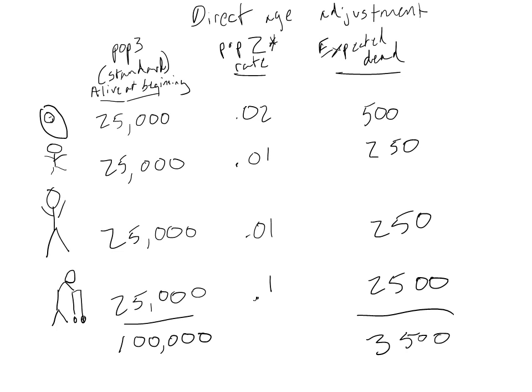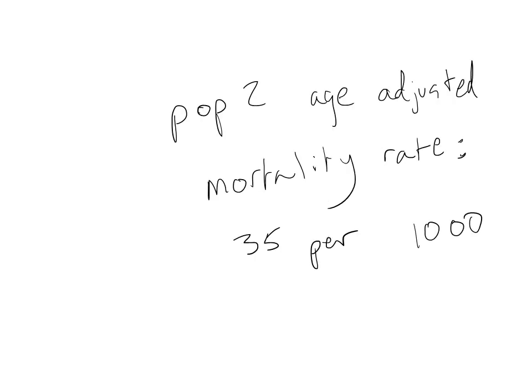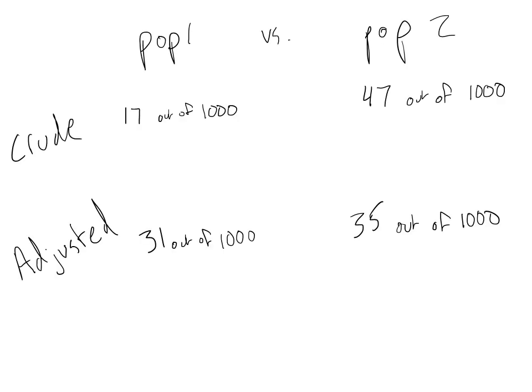Then we do the same thing for population 2. We apply population 2's age-specific mortality rates to the standard population's age distribution to get the expected number of deaths for each age group, sum the totals, and compute our age-adjusted mortality rate. In this case, our age-adjusted mortality rate for population 2 is 35 per 1,000. Now we can compare the age-adjusted mortality rates between population 1 and population 2. The adjusted mortality rates are much closer together than the crude mortality rates, meaning after accounting for age differences, the death rates were much more comparable.